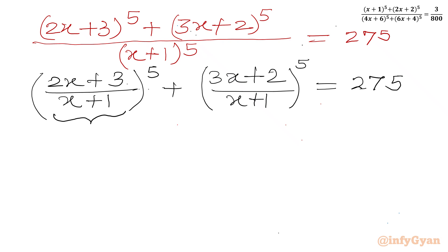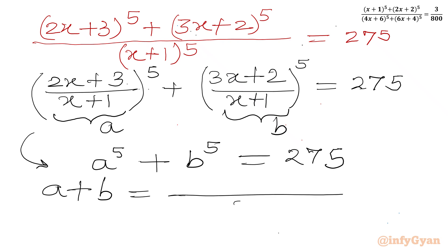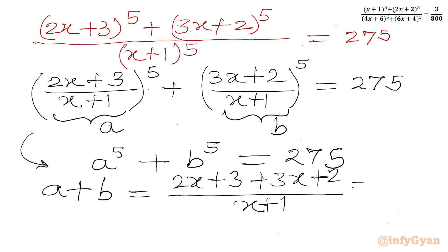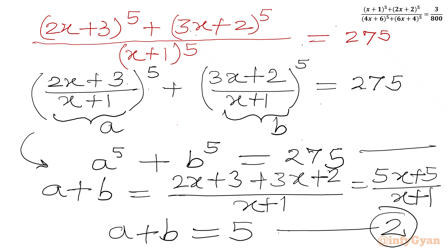Now we will use substitutions. Let's say this bracket is a and this bracket is b. So I can write our first equation: a power 5 plus b power 5 equal to 275. For the second equation, since the denominator is the same, we add the numerators: 2x+3 plus 3x+2 gives 5x+5 over (x+1). Taking 5 common from the numerator and cancelling (x+1), we get a plus b equal to 5. So this is equation 2 and the previous is equation 1.